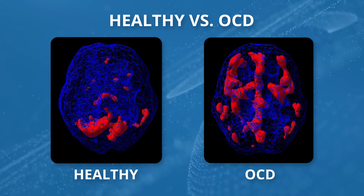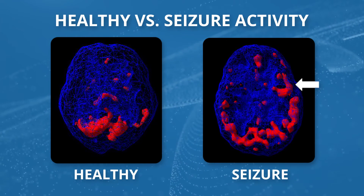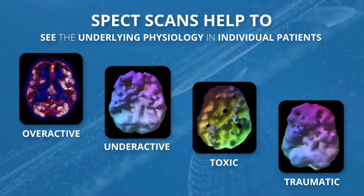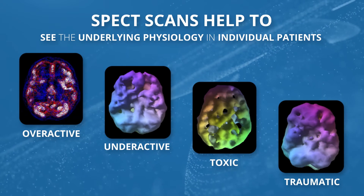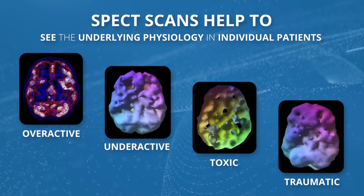But what about when the brain works too hard? We often see that in OCD, where the front part of your brain works too hard. In seizure activity, we'll see a focal hotspot in the brain — and SPECT was initially used for patients who had seizure disorders. One question I get asked is, 'I can tell clinically.' And I'm like — really? How can you tell clinically what is going on in someone's brain? SPECT scans help you see the underlying physiology: whether it works too hard or not hard enough, if there's a toxic pattern, or if there's trauma.